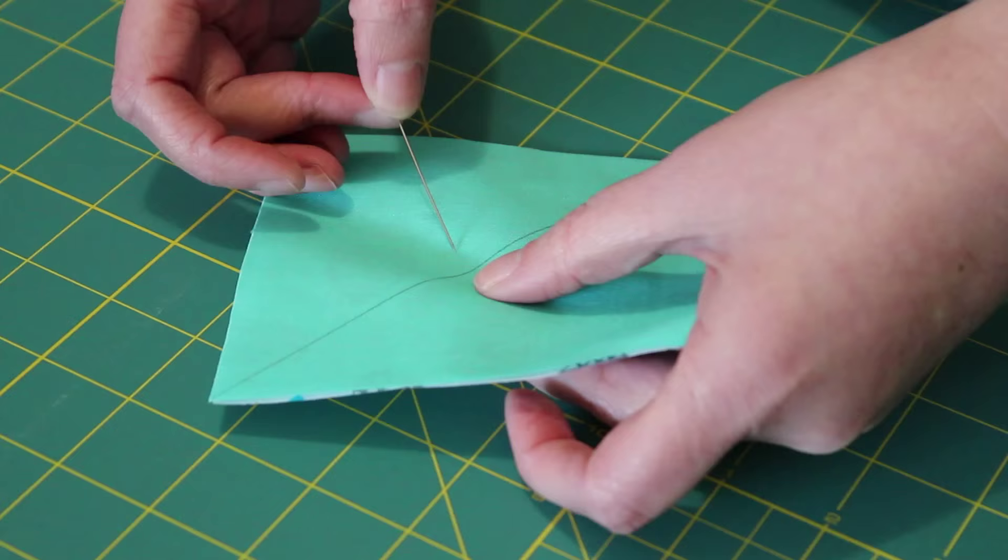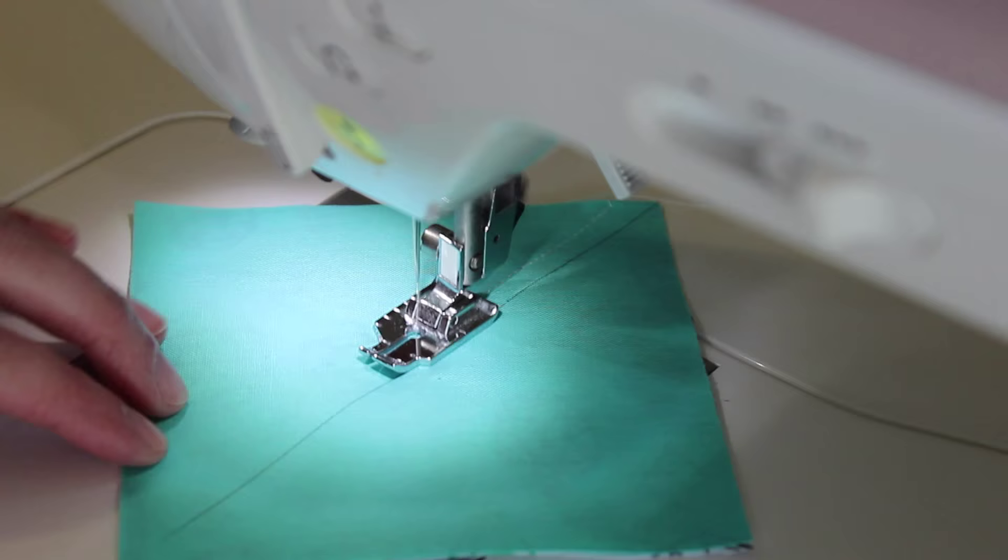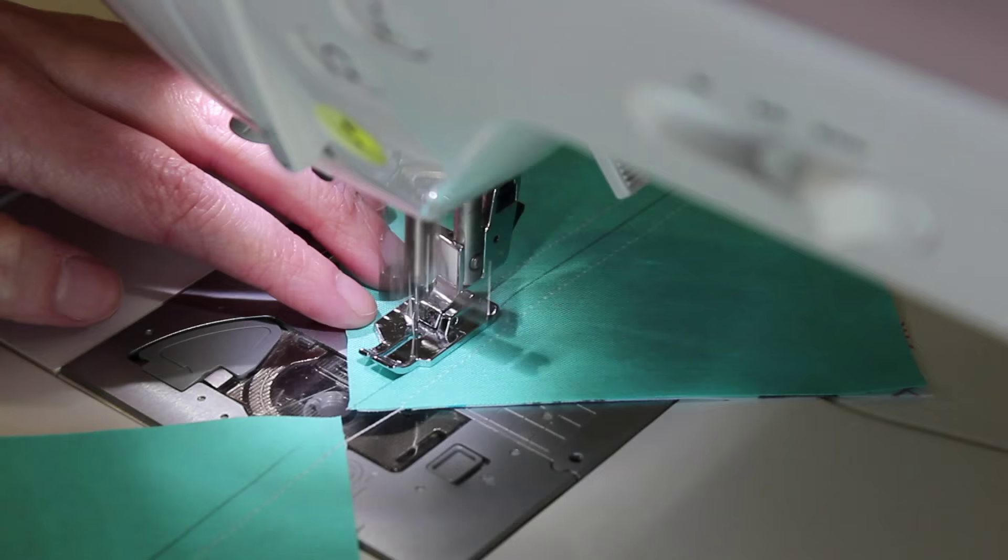At the sewing machine, place the edge of the foot along the left hand side of the pencil line and sew a quarter inch seam. Then carefully feed through the next pair of squares. Once you reach the end, remove the squares from the machine, turn them around and sew another quarter inch seam along the other side of the pencil line.